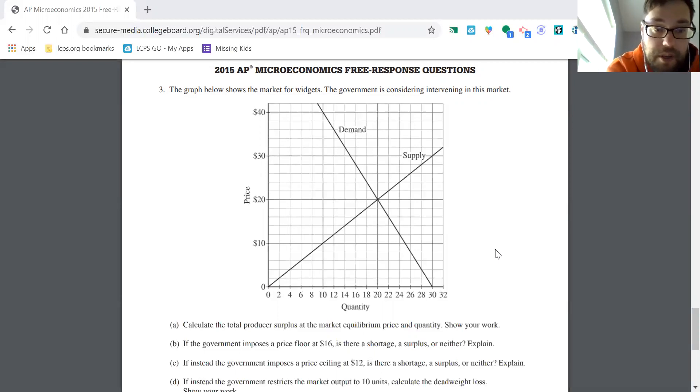So how do we calculate this number for producer surplus? Well, we have a triangle, so remember your formula, one half base times height. We've got to figure out these sides. This goes up to $20, so we've got one half times 20 times, and the quantity is at 20. So one half times 20 times 20 is one half times 400. So this ends up equaling 200. $200 for producer surplus. Make sure you show your work.